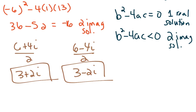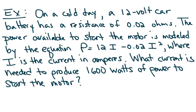Those two imaginary solutions are complex conjugates. Remember, whenever you have imaginary solutions to polynomials, they always come in pairs — they always come as complex conjugates. Remember that if you're not sure how to solve a quadratic equation, particularly if the answers are imaginary or irrational, you can always use the quadratic formula.